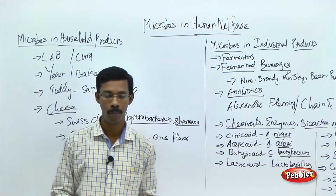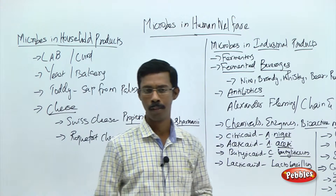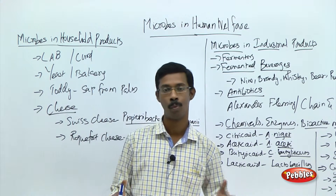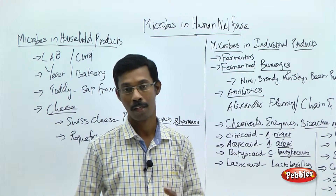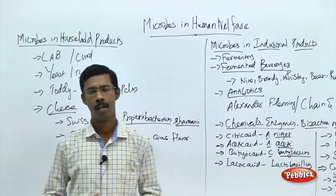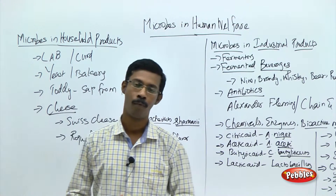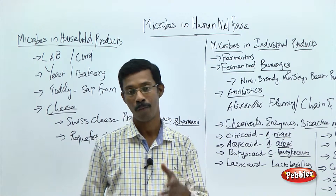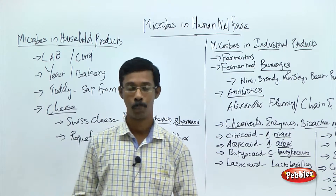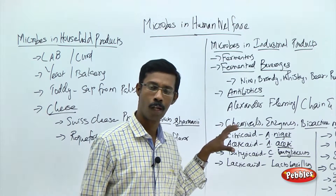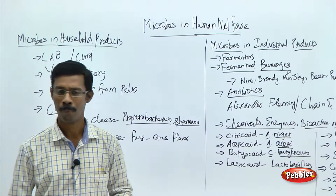We are going to discuss the beneficial roles of microbes towards human society. As I told you in the previous chapters, the microbes are the actual rulers of the world — they are omnipresent, present in water, soil, air, space, radioactive material, even hot springs and cold conditions. Whatever may be the environmental status, you can find some kind of microorganism unique to that particular environment. They can live at any place in the world.